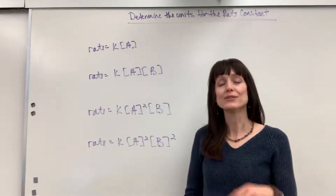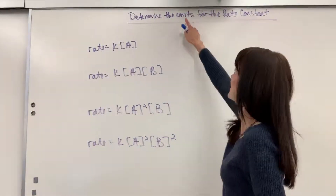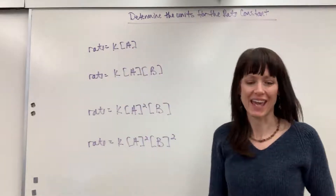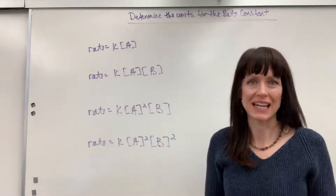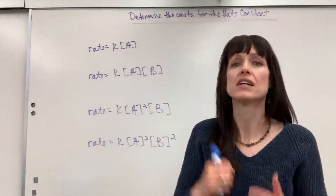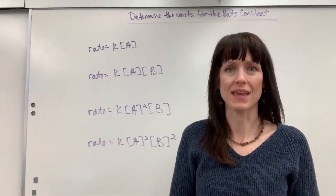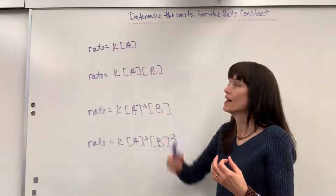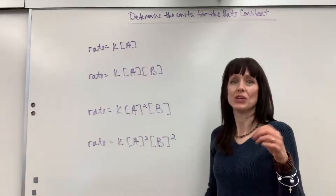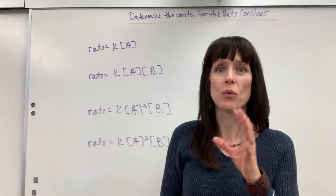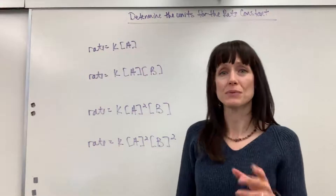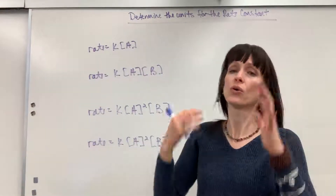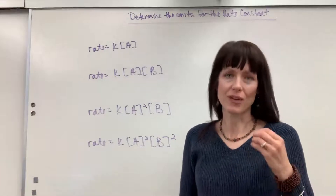I want to teach you how to determine the units for the rate constant — really important. The rate constant is K. Looking at 20 years worth of FRQs from AP, whenever they've asked for the value of K, they've always asked for the unit, except for one time. Giving the correct unit was always worth one point. So it is totally worth your time to know how to figure out units.